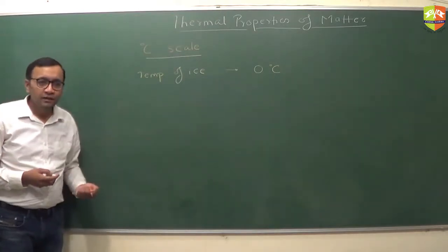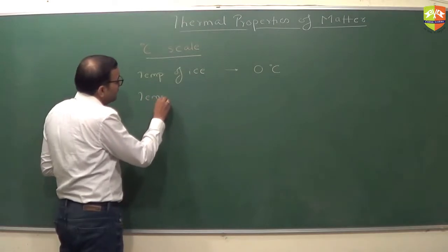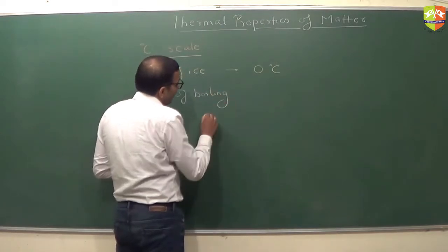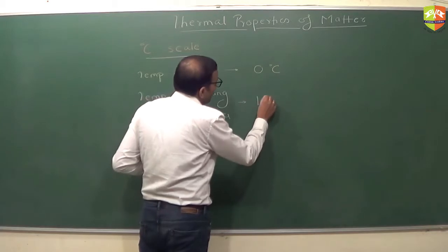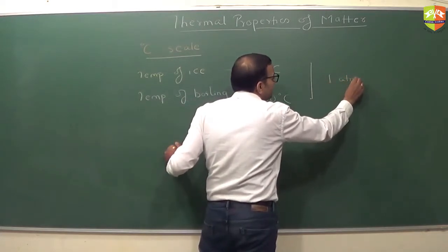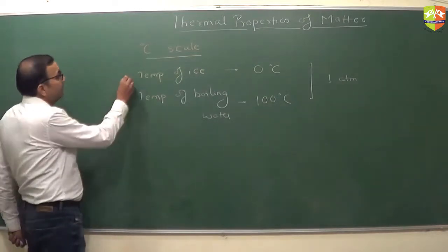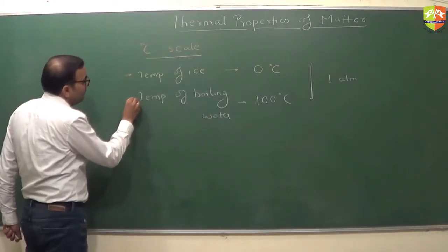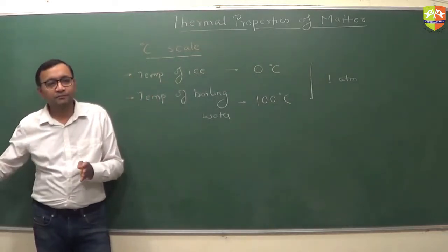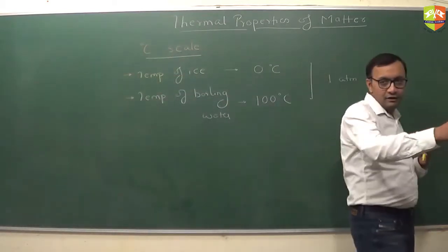We are assuming the temperature of ice to be zero degrees Celsius, and the temperature of boiling water to be 100 degrees Celsius, both at one atmosphere. Between the ice point and the boiling point, the entire scale is divided into 100 equal parts. So it's a linear scale with equally spaced intervals from zero to 100.